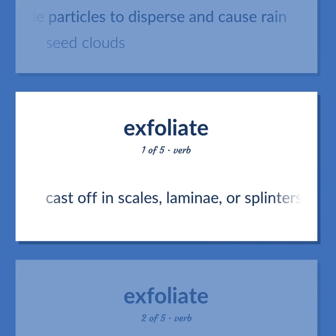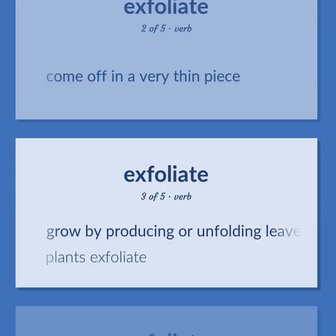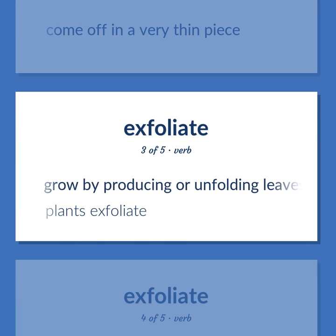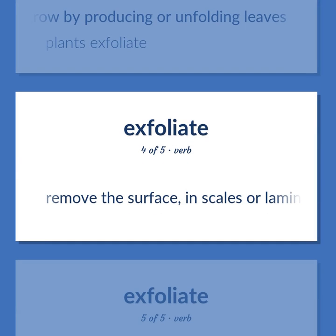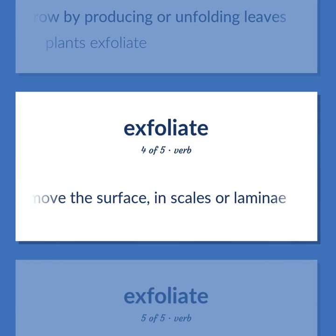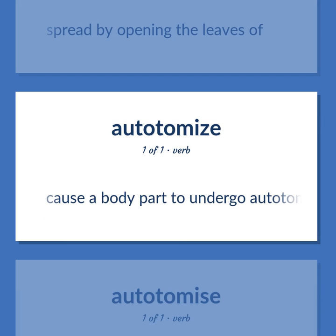Exfoliate: cast off in scales, lamini, or splinters. Come off in a very thin piece. Grow by producing or unfolding leaves — plants exfoliate. Remove the surface in scales or lamini. Spread by opening the leaves of. Cause a body part to undergo autotomy.